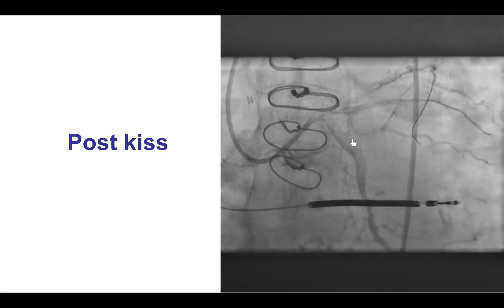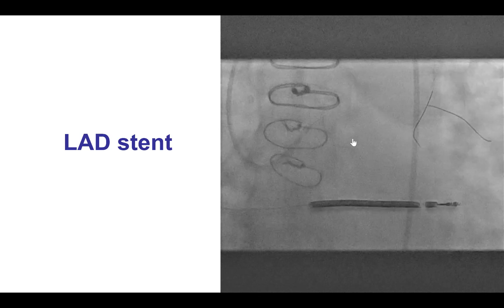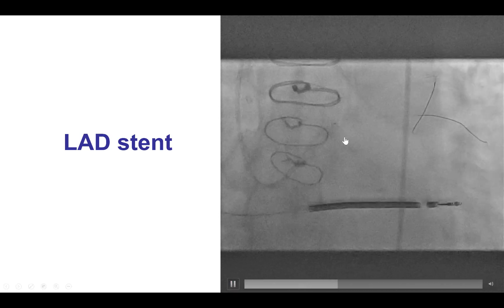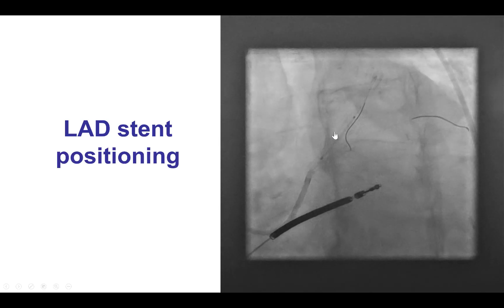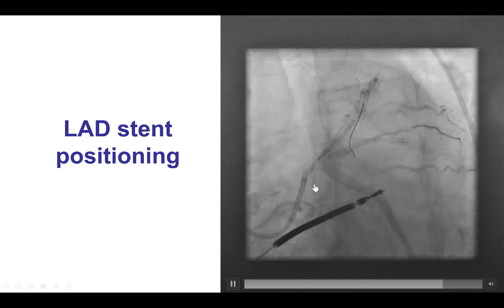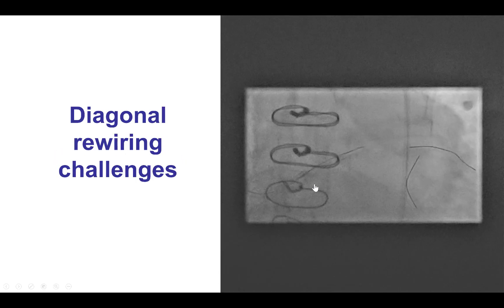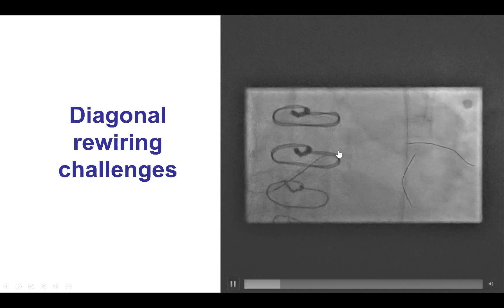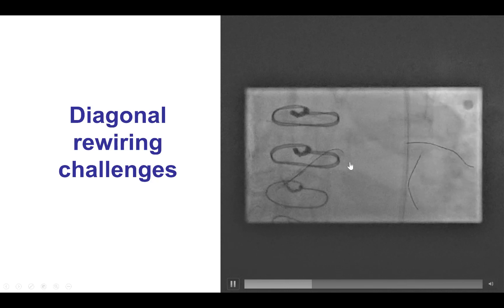The vessel looked good after the kissing inflation — both the LAD and diagonal looked okay. We proceeded with delivering the stent into the LAD, positioning it so it did not protrude too much into the left main. It was successfully deployed. But then once again we faced similar challenges: we had to rewire the diagonal and perform the second kissing balloon inflation.